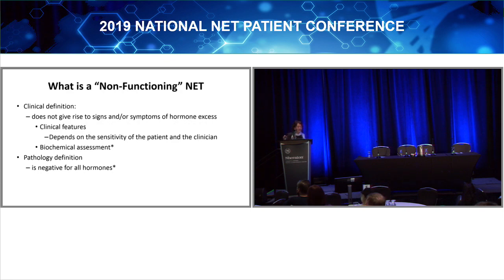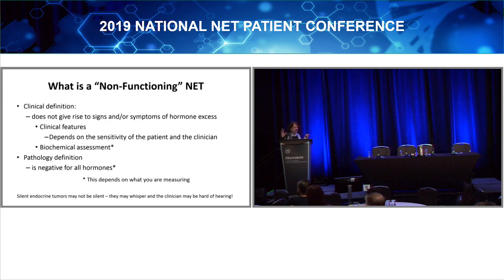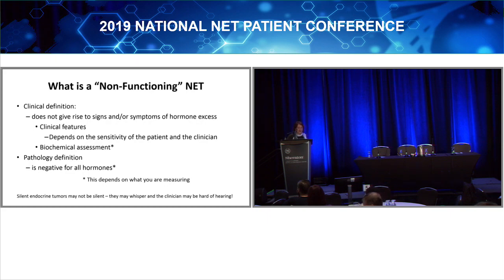The pathology definition for a non-functioning tumor is that it's negative for all hormones. But in our lab at UHN we measured many hormones, while many other hospitals — including some well-known centers of excellence — measure only three or four hormones by pathology, and if those are negative they call it non-functioning. So this definition is very soft and intangible because it depends on what you're measuring. Silent or non-functioning tumors are not always silent — somebody shouting can be heard by everyone, but somebody whispering may not be heard.